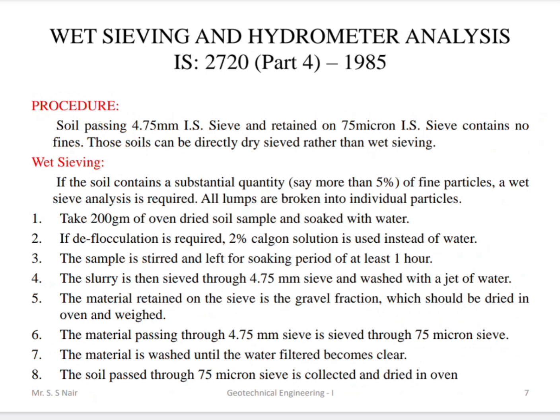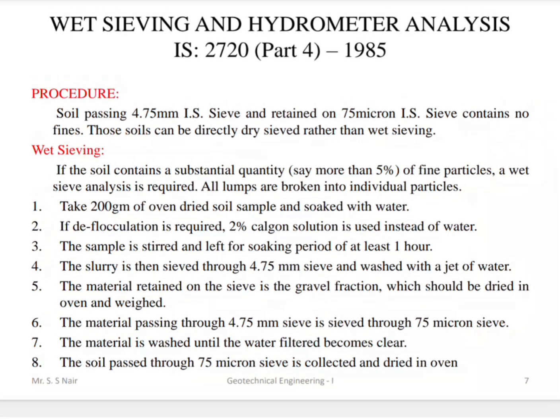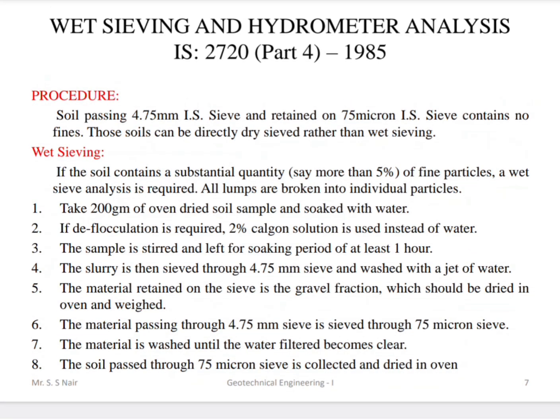Deflocculation is required; a 2% calgon solution is used instead of water. The soil sample is stirred and left for a soaking period of one hour. The slurry is then sieved through a 4.75 mm sieve and washed with a jet of water. Material retained on the sieve is the gravel fraction, which should be dried in the oven and weighed.